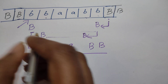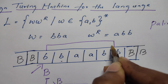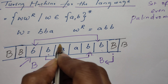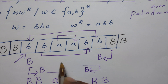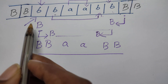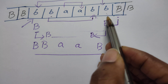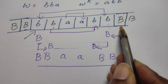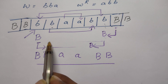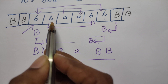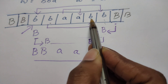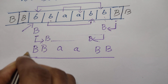The pattern is: the first symbol is matched with the last, the second with the second-to-last, and so on. For example, the first b is replaced by blank, then the last b is replaced by blank. Then the next b is replaced, and its matching b from the right is also replaced by blank. This continues iteratively until all characters are matched and erased.